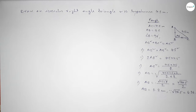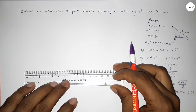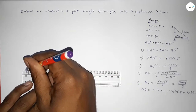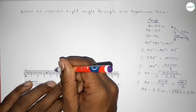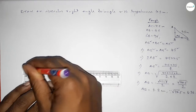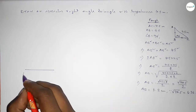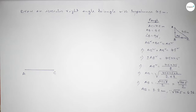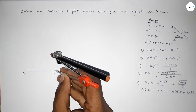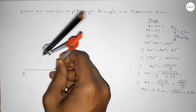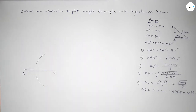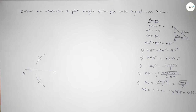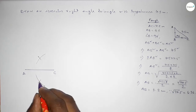Now we draw the isosceles right angle triangle. First, draw a line of length 4.5 centimeters, marking point A at one end and point C at the other. Then bisect the line AC by placing the compass and cutting arcs above and below, so that both curves intersect at two points.